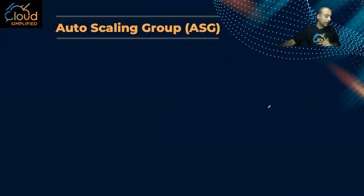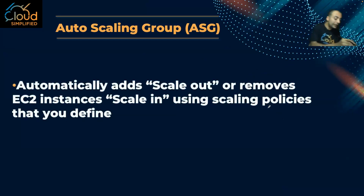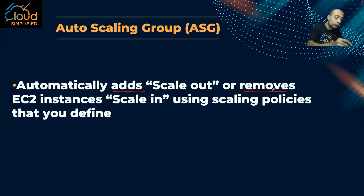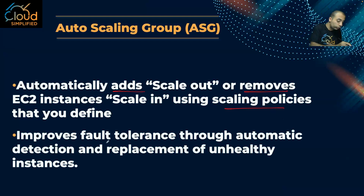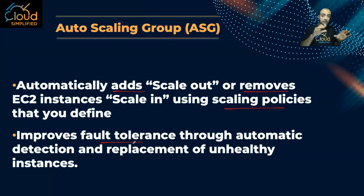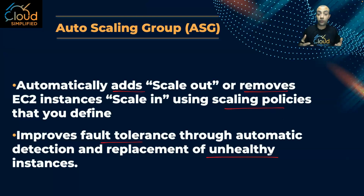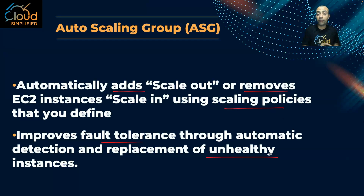Let's see the characteristics of Auto Scaling. Auto Scaling will add instances — that's scaling out — or remove them — that's the concept of scaling in — using scaling policies that you define. In my case, it was based on CPU utilization. Another important functionality of Auto Scaling is it will improve fault tolerance, which means Auto Scaling is monitoring the health of your EC2 instances. If something happened and an EC2 instance becomes unhealthy, Auto Scaling will detect it and replace it with another working one. So two very important functionalities: the first is Elasticity — scaling out or scaling in — and the second is monitoring the health of your EC2 instances.